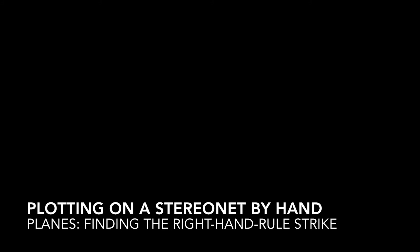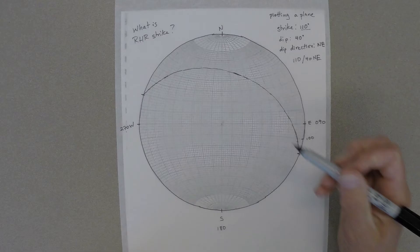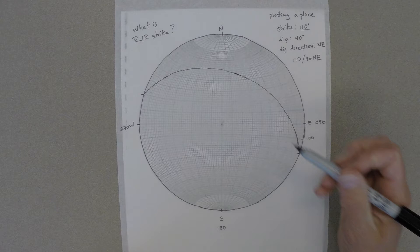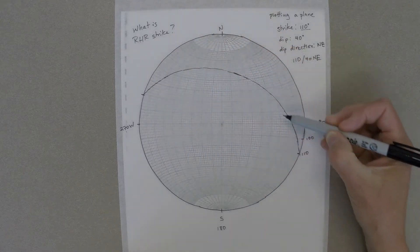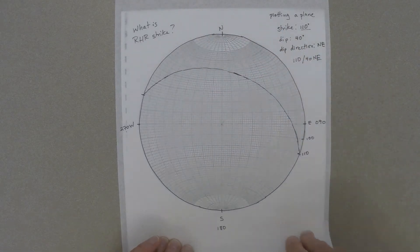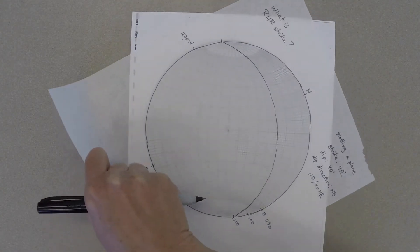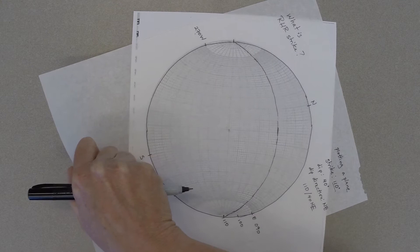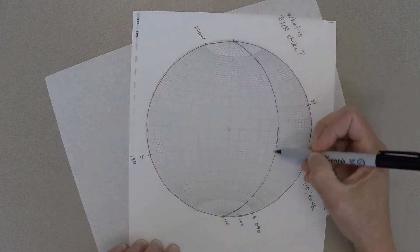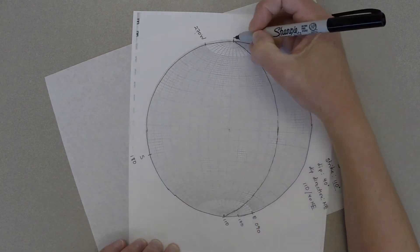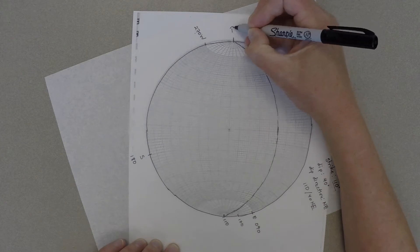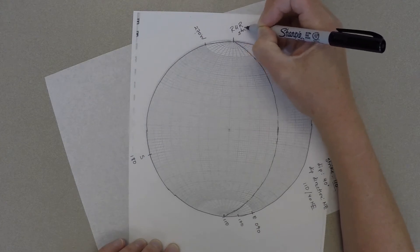The American right-hand rule of strike is measured so that the dip direction is to the right of the strike. You can find that on a stereo net by spinning your tracing paper so that the bulge on the tracing paper is to the right side of the stereo net. Then the end of the great circle that's to the north will be your right-hand rule of strike, regardless of the measurement that you actually made in the field.